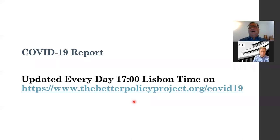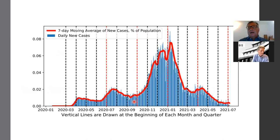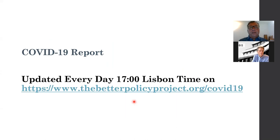The COVID shock is front and center in terms of the construction of any forward-looking framework at this point. This is an example of how we've used both R and Python to design a report for macroeconomists that want to understand things like scale and effectively the battle between the vaccine and the virus — trying to put the whole story together in one page of charts. These are updated every day at 5 p.m. Lisbon time. The first chart is basically the daily new cases, looking at data for the United States.